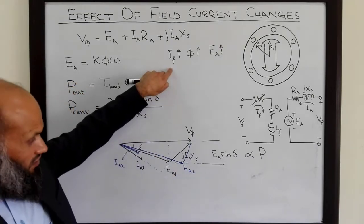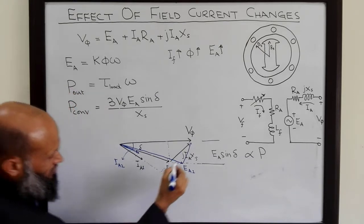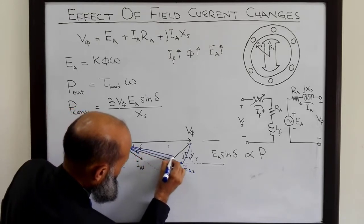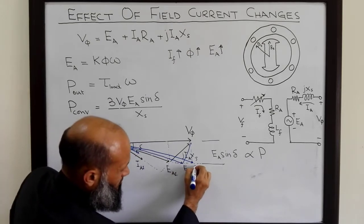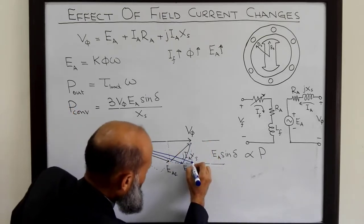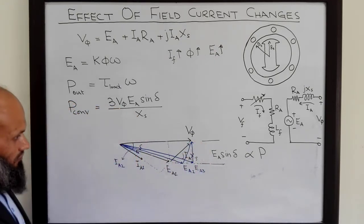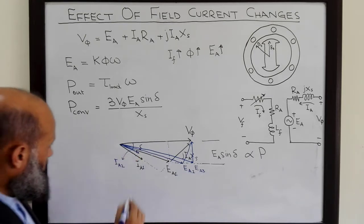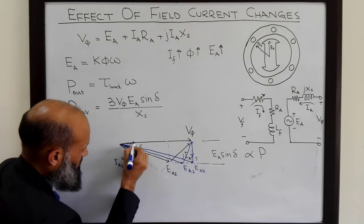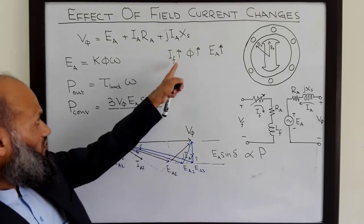If we further increase field current, the length of this Ea vector will again increase, moving along the same horizontal line so that the vertical component proportional to power remains the same. This gives us Ea3. The corresponding jIa3Xs phasor and the perpendicular Ia3 phasor show that the magnitude of Ia further decreases.